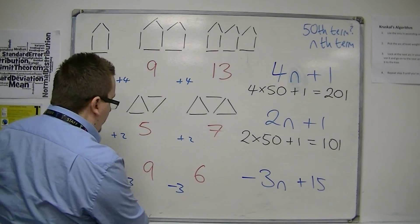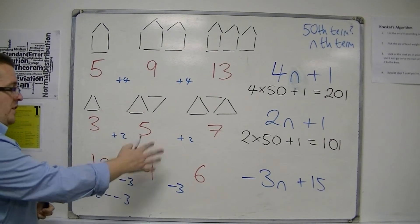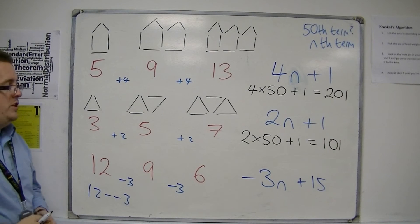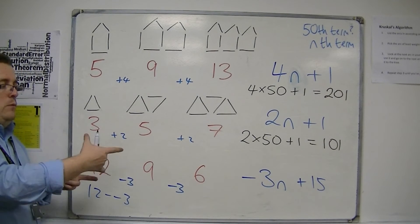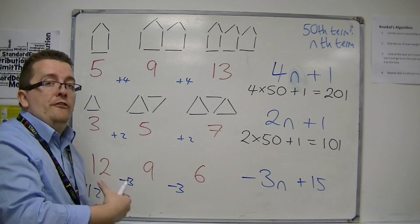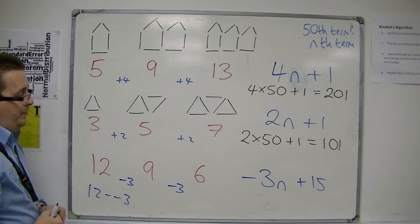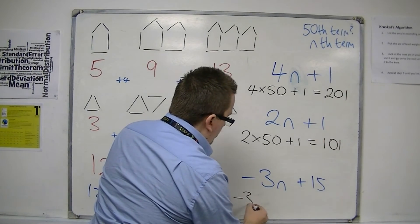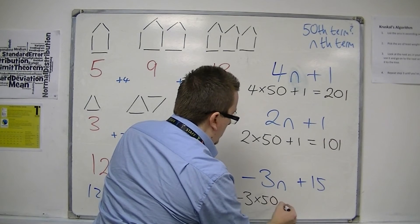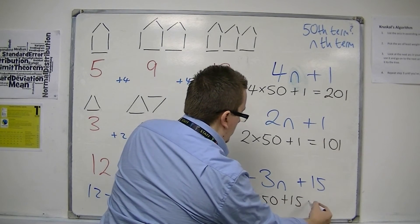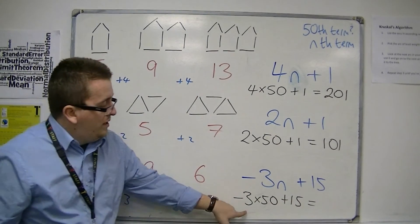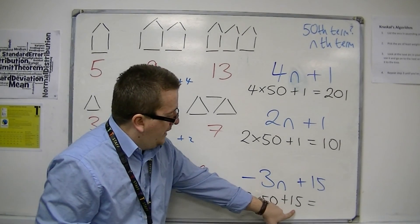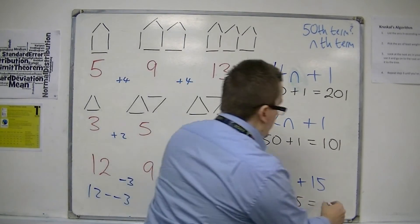Now for this number sequence — 12, 9, 6, 3, 0, minus 3, and so on, subtracting 3 each time — what we're really asking is what would be the 50th number in that sequence? So I've got minus 3 lots of 50 plus 15. Well, minus 3 lots of 50 is minus 150, plus 15 is minus 135.